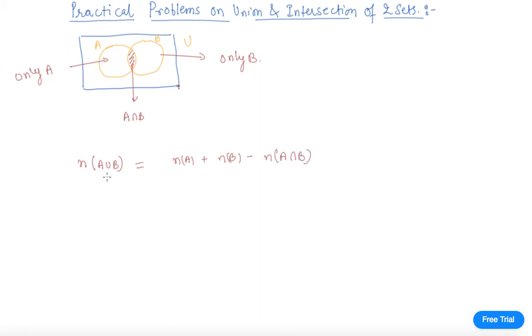N(A∪B) is the whole area, the number of elements in the set A union B. N(A) is this area, only A. This one is the only A area, and N(B) is the other area which is only B.